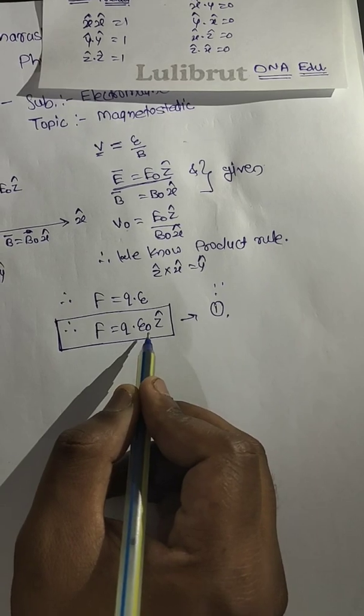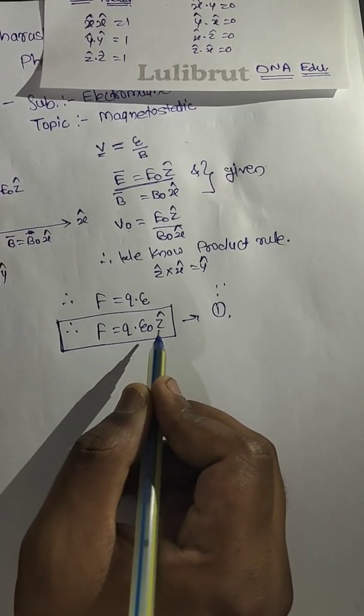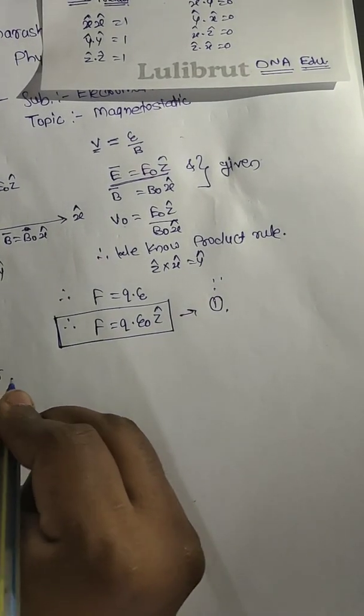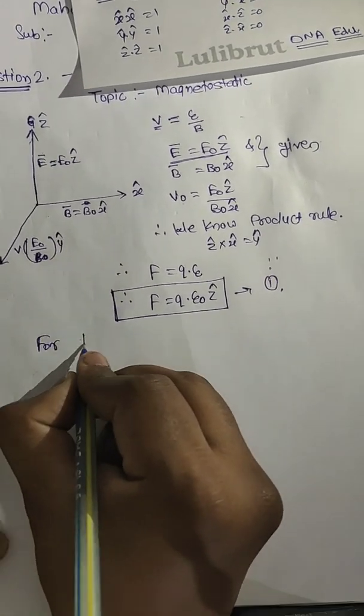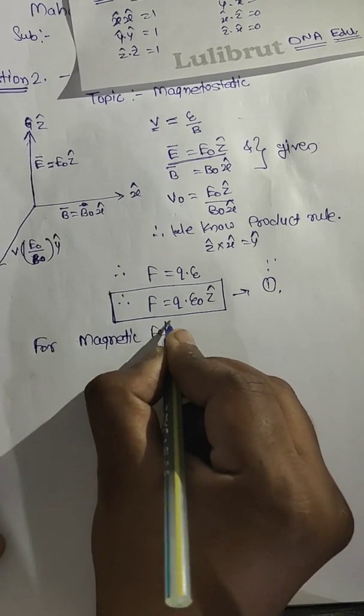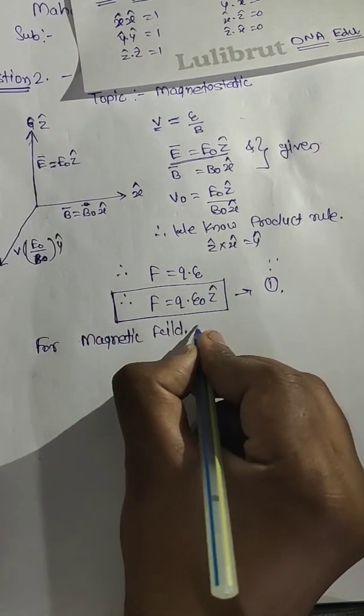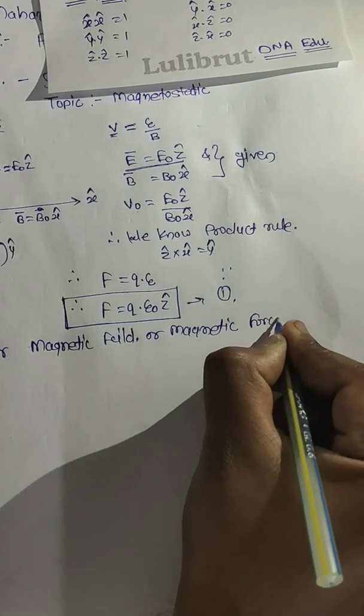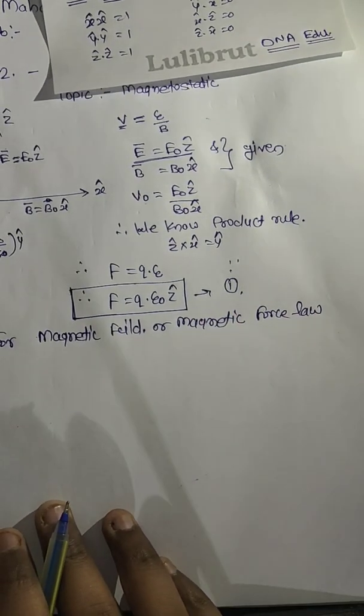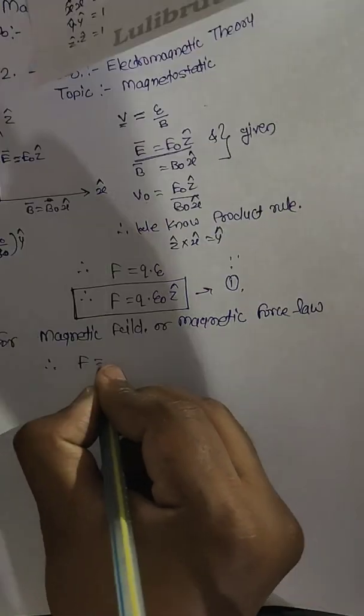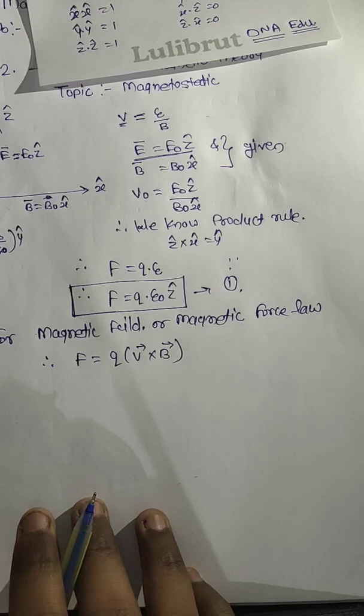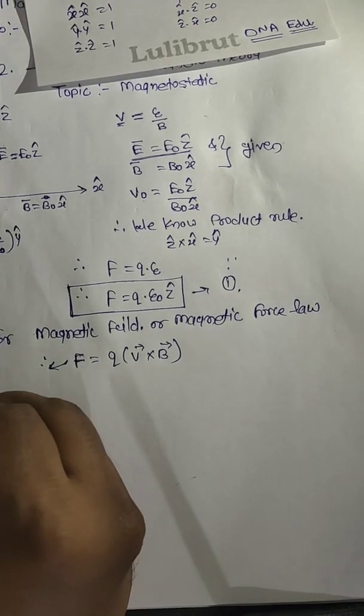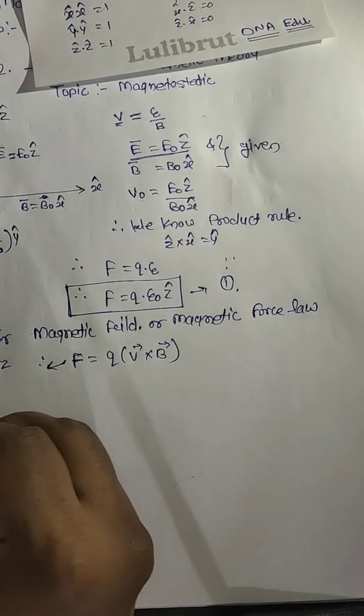Similarly for magnetic field or magnetic force law. Now the formula is F is equal to Q into V vector into B. The formula we have, this is the magnetic force law. It is also called as Lorentz force law.